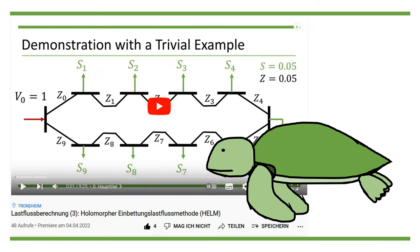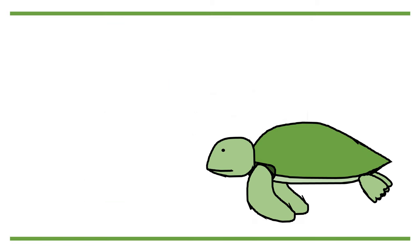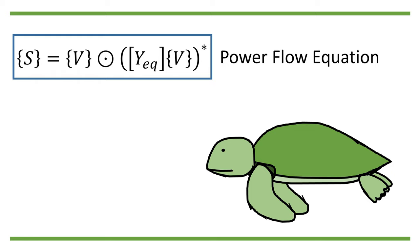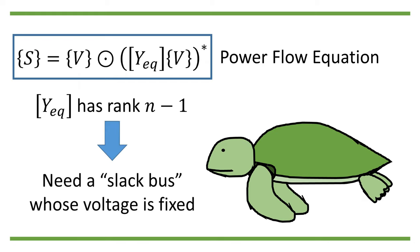In the previous power flow analysis video of HELM, I said that in the power flow equation s equals v through y start, y eq v conjugate, because the node admittance matrix y eq has rank n minus 1, where n is the number of nodes, we need a slack bus whose voltage is predetermined and fixed.